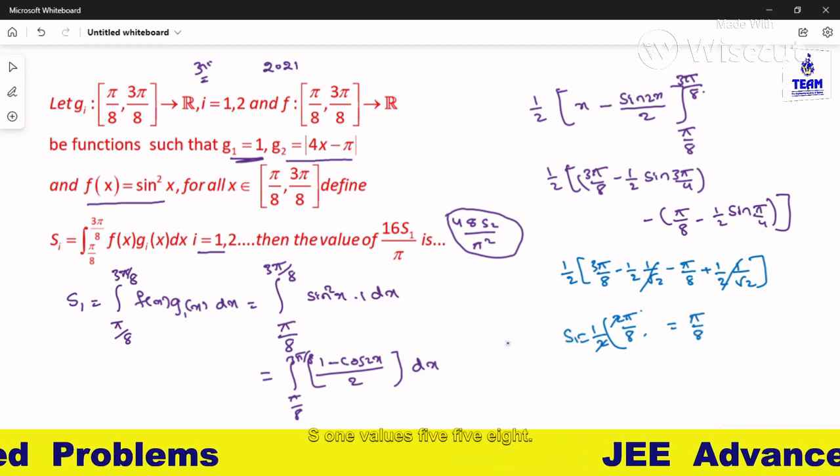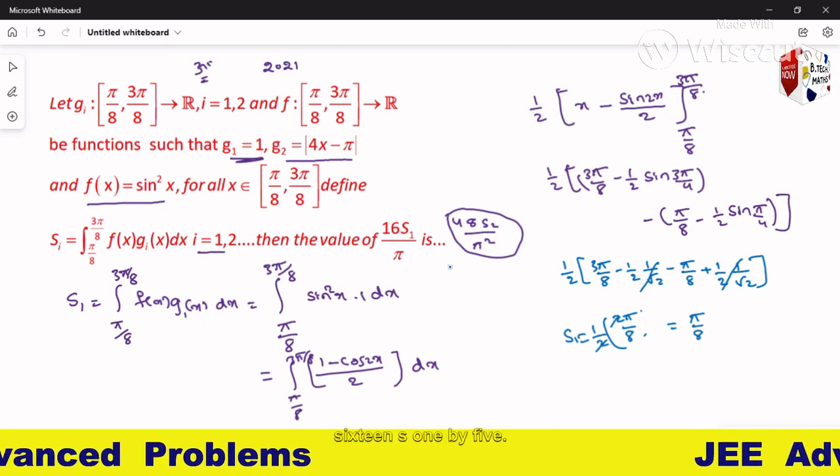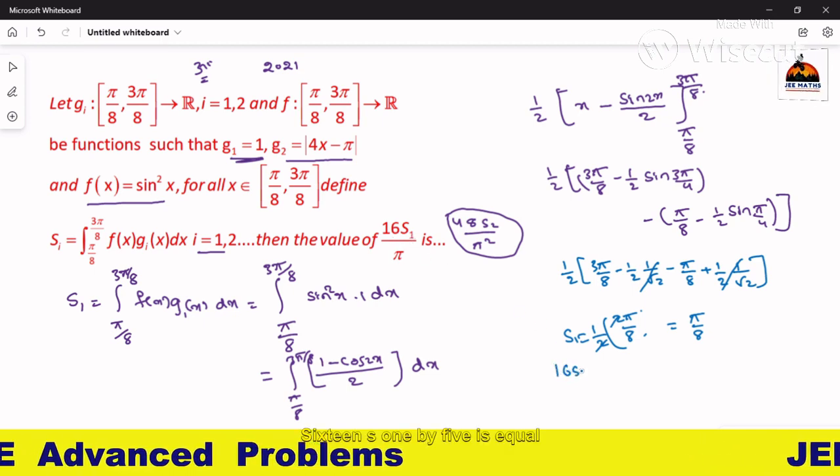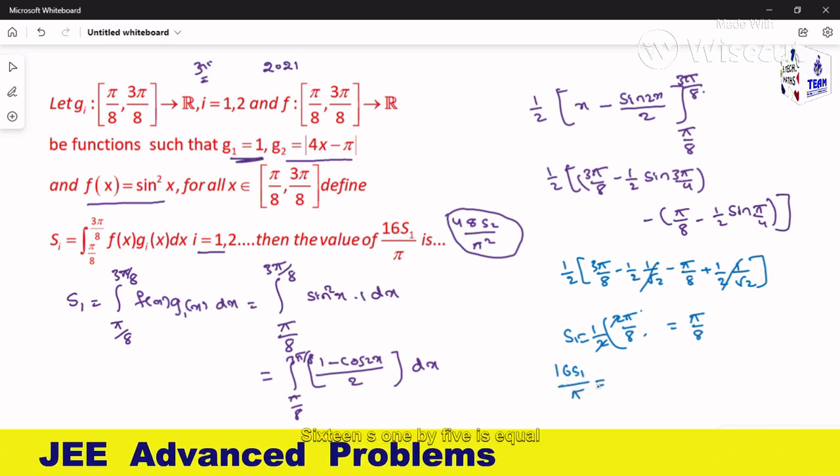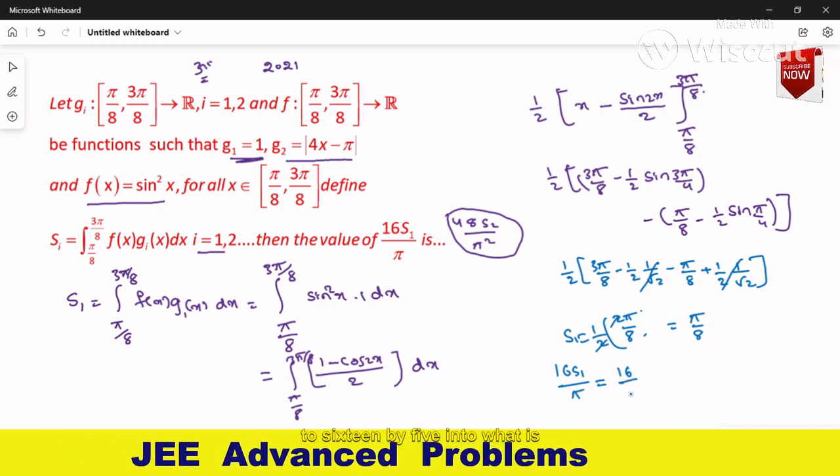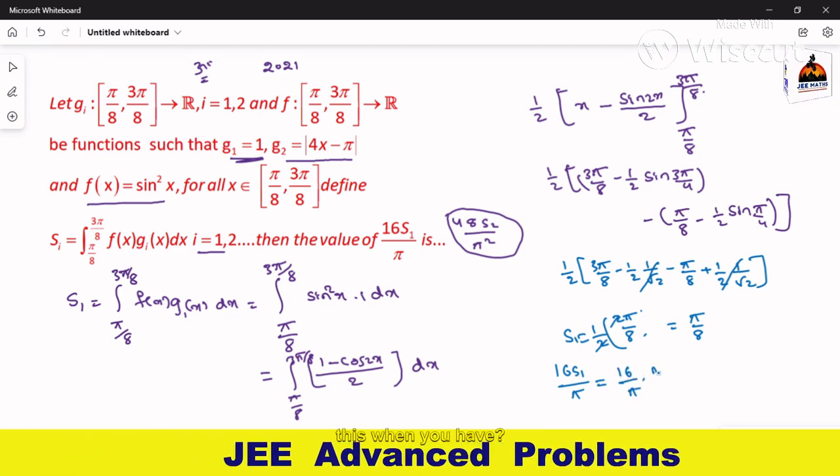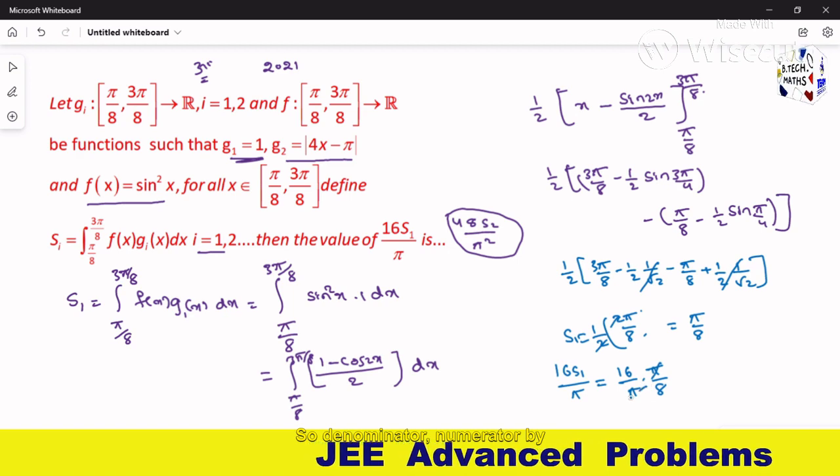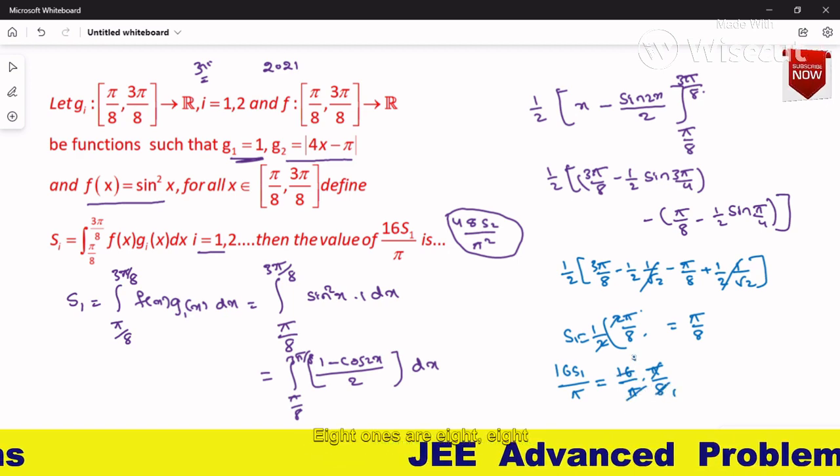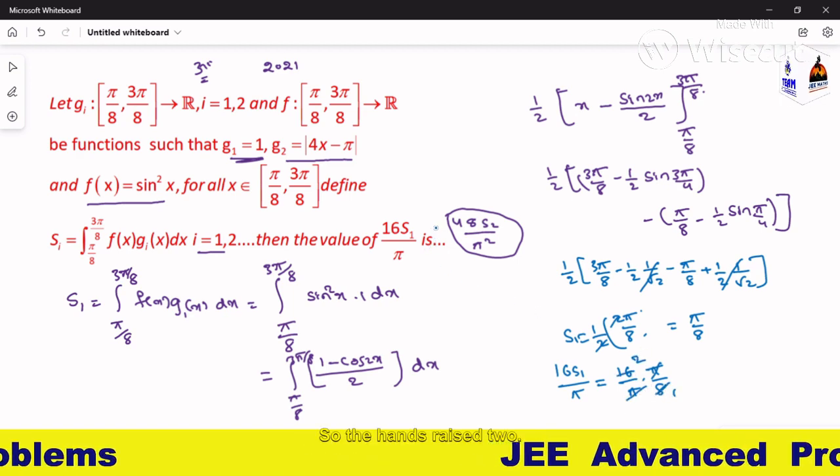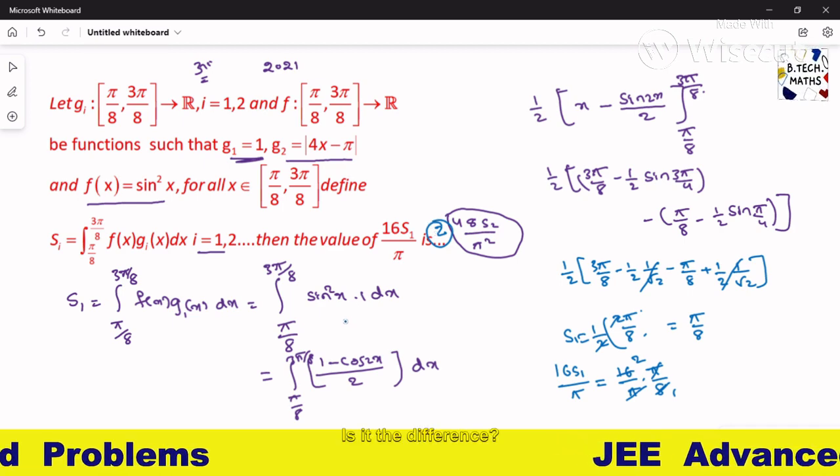So S1 value is π/8. Now what I need actually is 16 S1 by π. 16 S1 by π equals 16 by π into what is S1, you have π/8. So numerator π cancels, 8 times 1 is 8, 8 times 2 is 16, so the answer is 2.